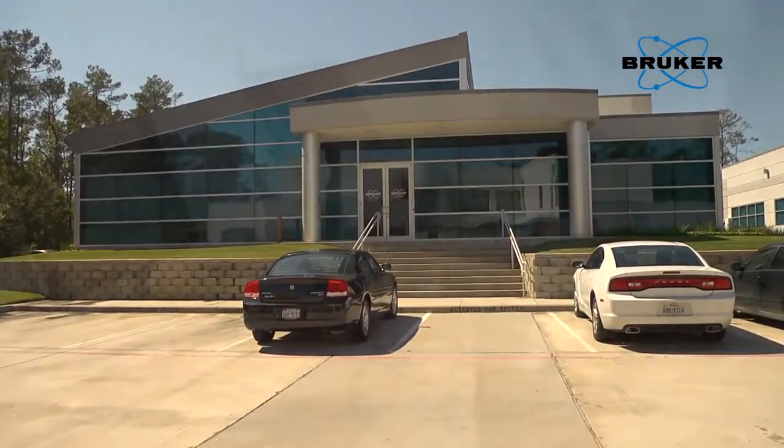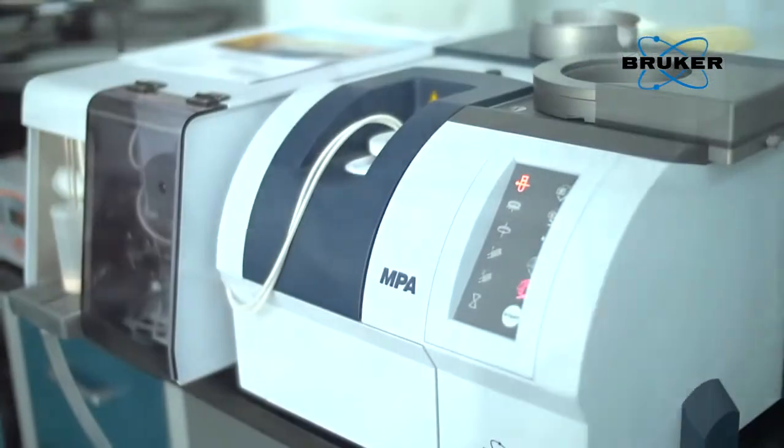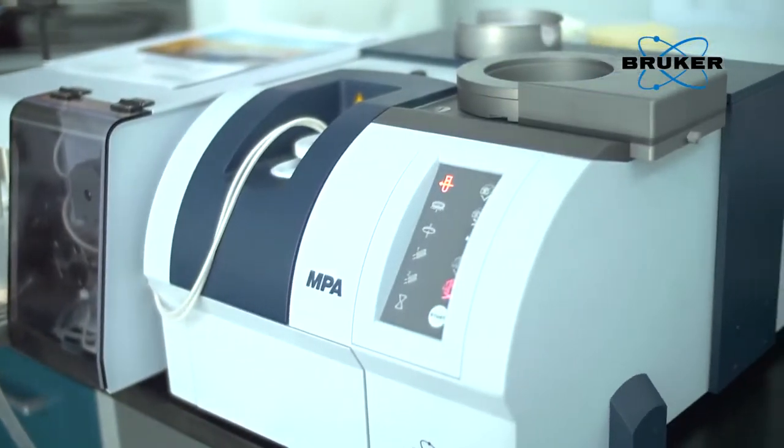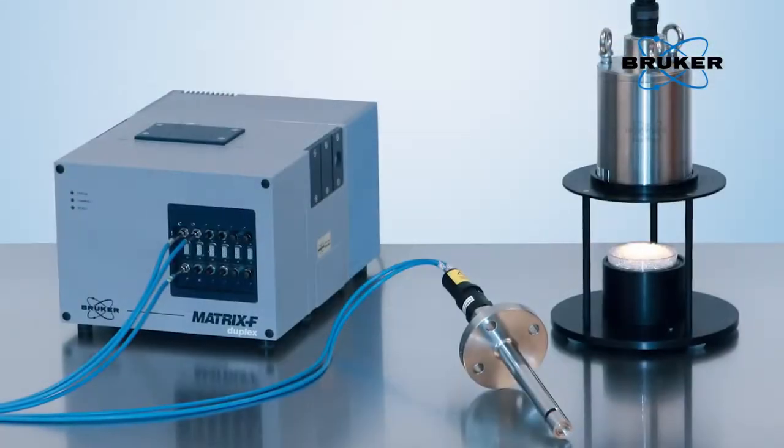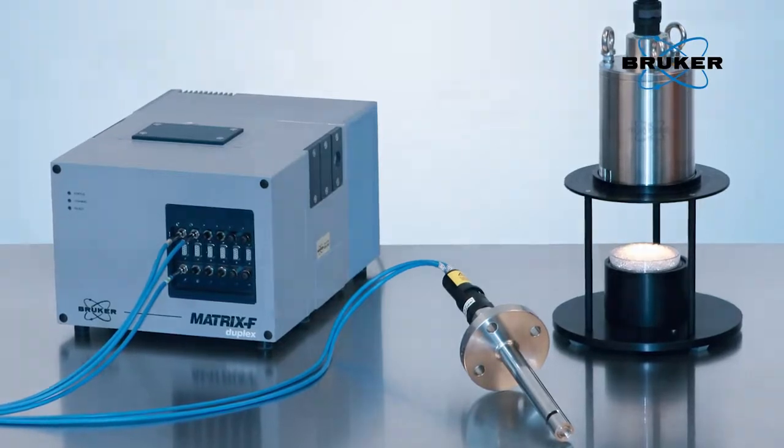Bruker's FT-NIR product line includes the Tango, the MPA, and Matrix I spectrometers for lab and at-line applications, as well as the Matrix F series for process control.